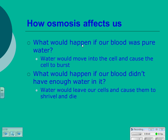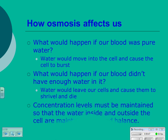This is also why you can drink too much water and it can kill you — but we're talking lots and lots, gallons at one go. Concentration levels must be maintained so that the water inside and outside the cell are kept in a good balance. That's part of the homeostasis process.